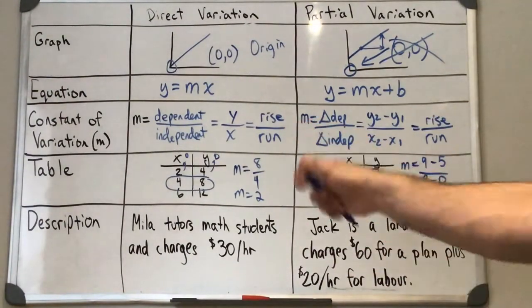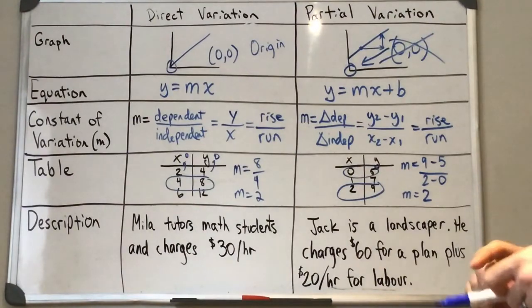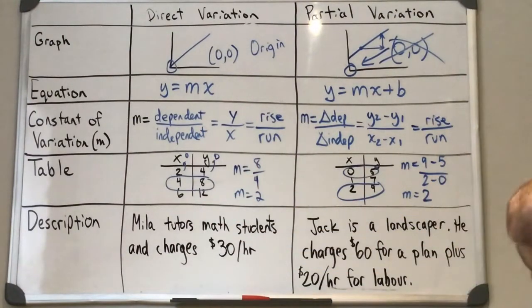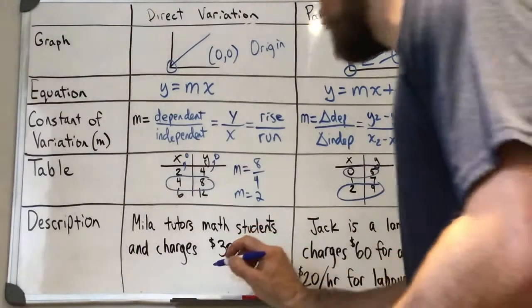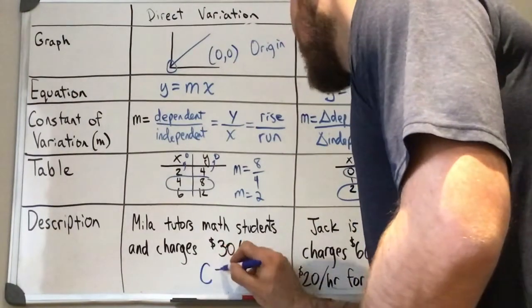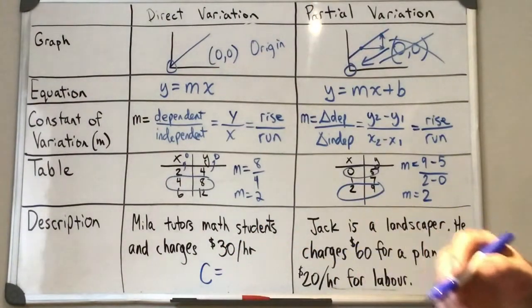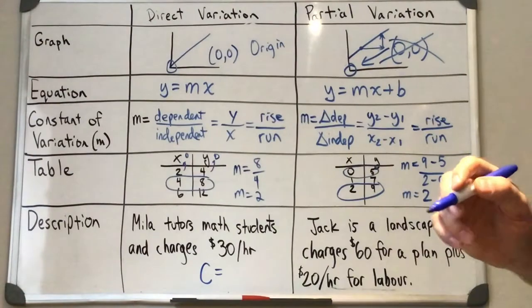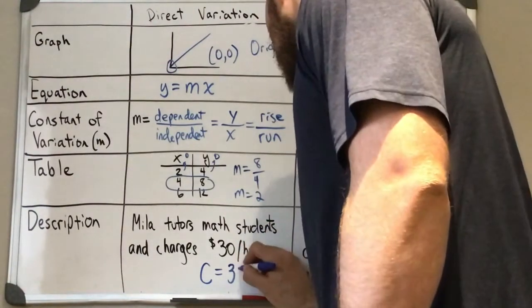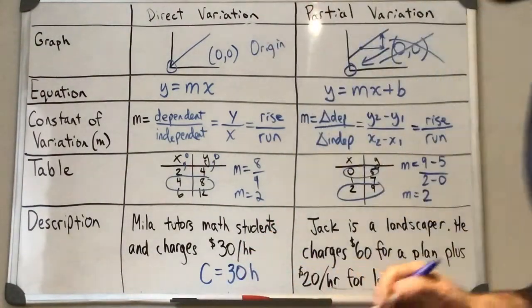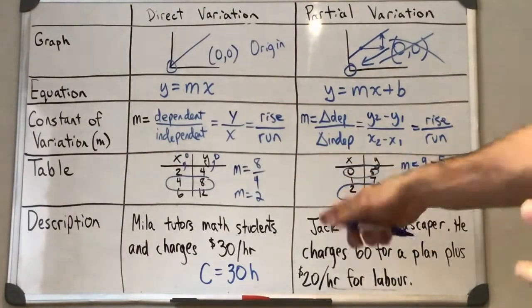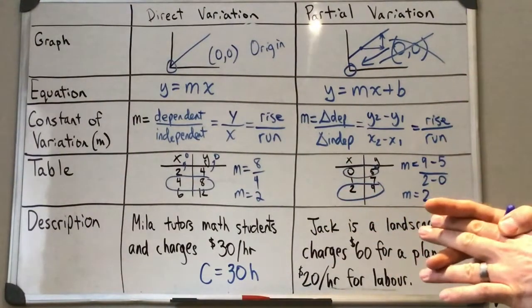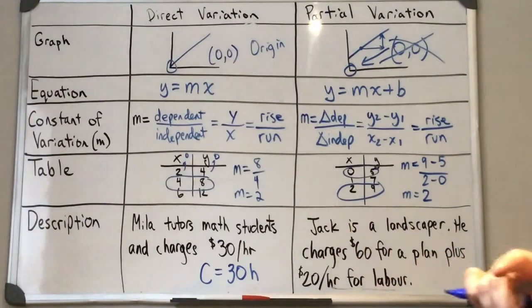Lastly, from a description, we can look at this one. Mila tutors math students and charges $30 per hour. Okay, so if we were to create an equation for this one, let's say c is the cost for her tutoring service. It's going to be equal to, let's say, 30h. So if we knew the number of hours, which would be our independent variable, we could calculate the cost.